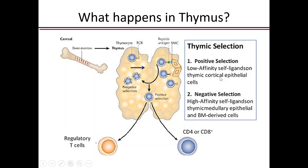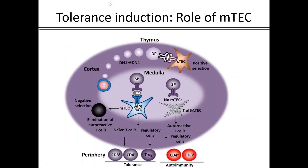Once a T cell can recognize its own MHC, it moves into the medulla. In the medulla, T cells that bind self-antigens with very high affinity are all deleted, so that self-reactive T cells do not enter the periphery. This is one of the major mechanisms by which tolerance is induced. The other thing that happens is generation of regulatory T cells.